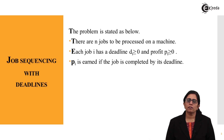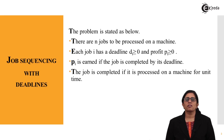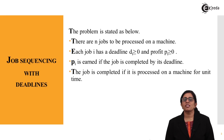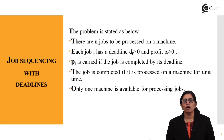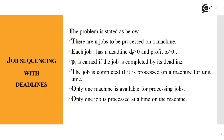The job is completed if it is processed on a machine for a unit amount of time. If it completes in that particular unit time then we say it meets the deadline. Only one machine is available for processing the job, and only one job is processed at a time on the machine.